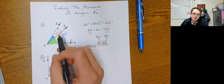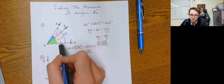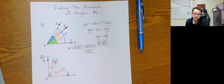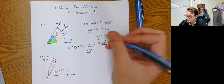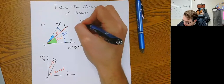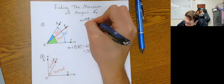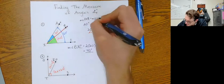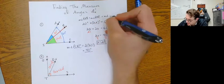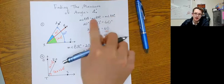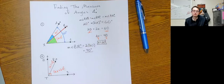Some of you might skip ahead and say: I know this is 20, I know the whole thing is 60, so 60 minus 20 is 40. That's a quick way to do it. But you can set up the equation using the angle addition postulate: the measure of angle AXB plus the measure of angle BXC equals the measure of angle AXC. The angle addition postulate allows you to create an equation.